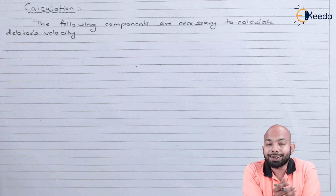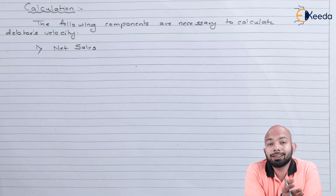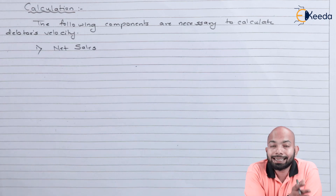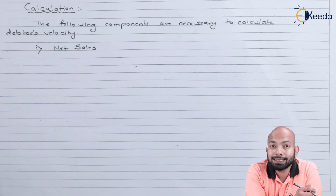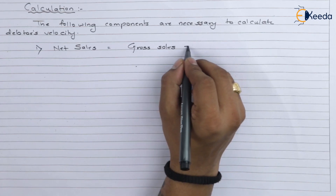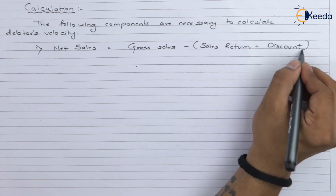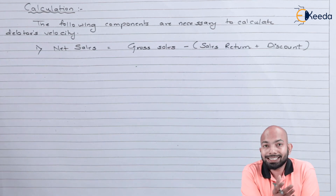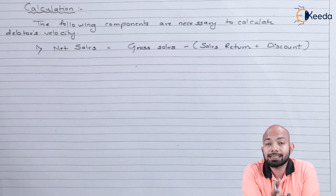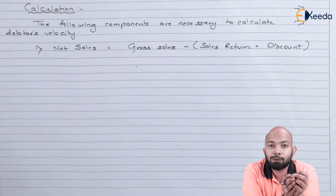The following components are necessary to calculate debtor's velocity. When we talk about debtor's velocity, we are trying to find out the number of days a credit period can be given to a debtor. For that, we need first the net sales. To figure out net sales, the formula is gross sales minus sales return plus discount on sales. The sales return part and the discount on sales part should be clubbed together and subtracted from gross sales to give you net sales.